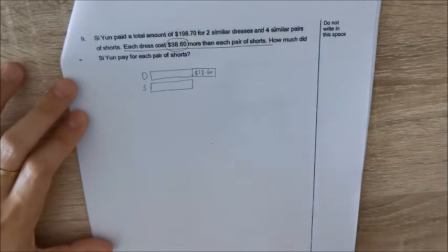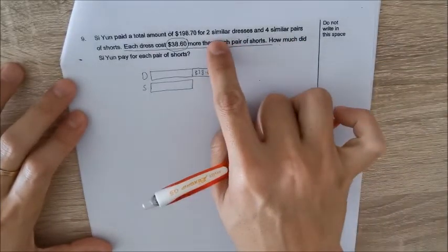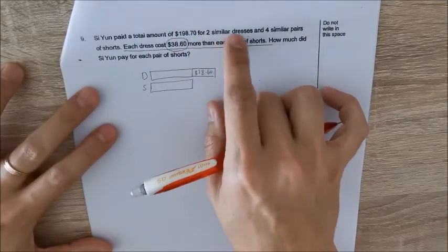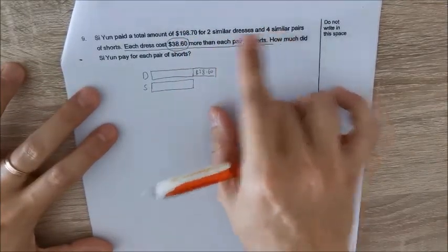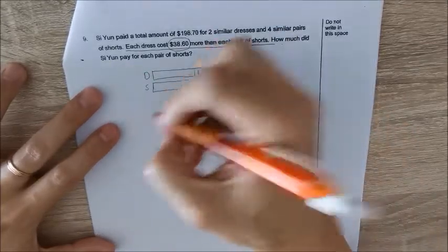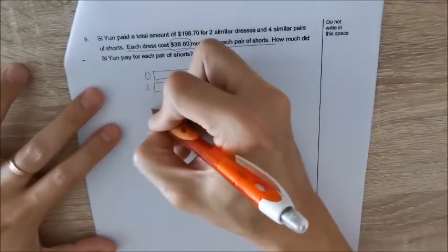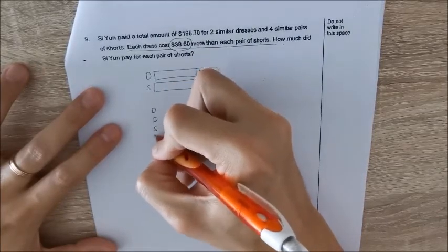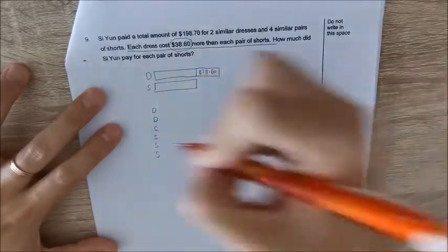So now I'm ready to represent the first sentence. The total is $198.70 for two similar dresses and four pairs of shorts. So I'm going to draw all six of them - two dresses and one, two, three, four shorts.